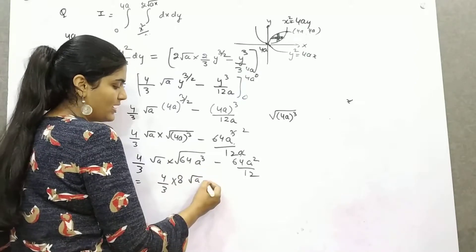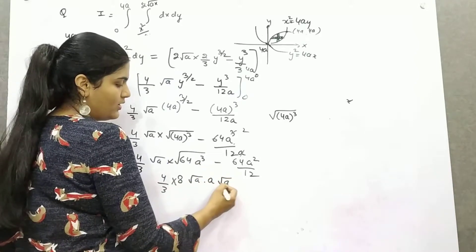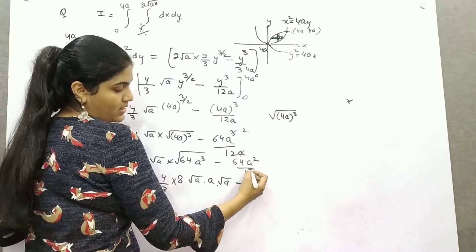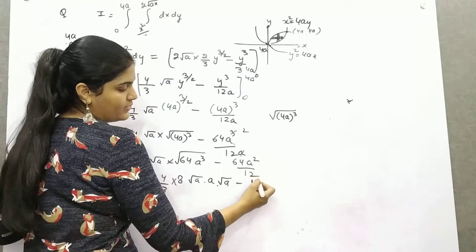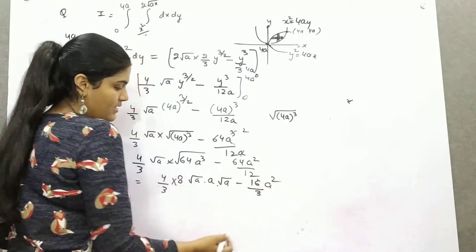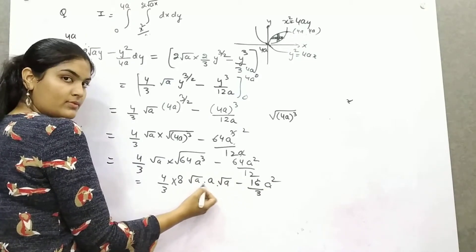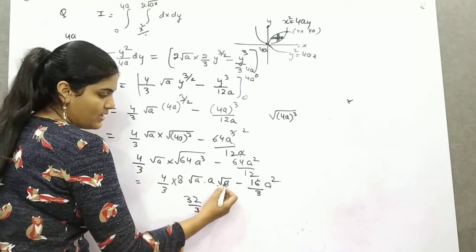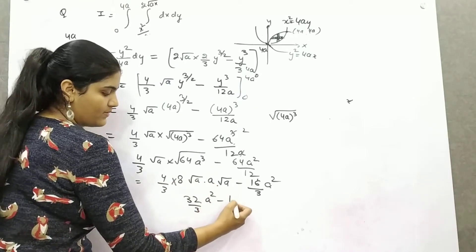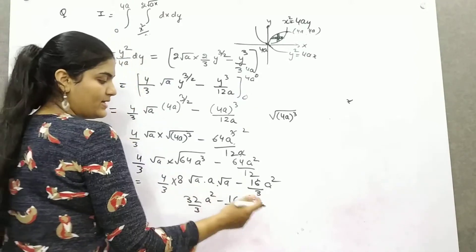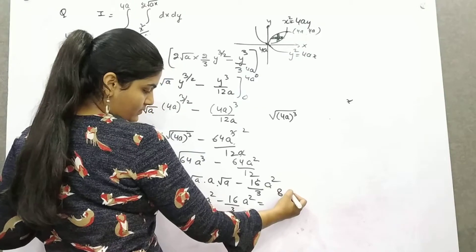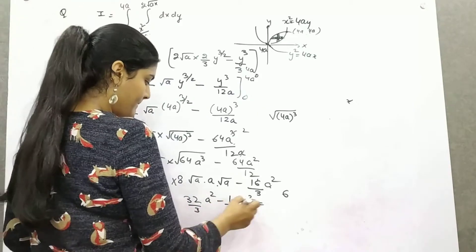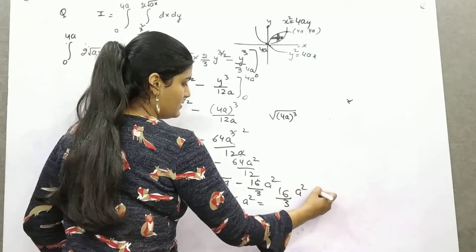Simplifying further: √a · √(a²·a) = a · √a = a^(3/2). Multiplying out: (4/3)·√a·8·a·√a = (4/3)·8·a² = 32a²/3. Subtracting the second term: 32a²/3 − 16a²/3 = 16a²/3. So the final answer is 16a²/3.